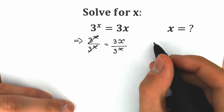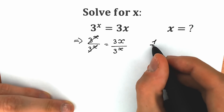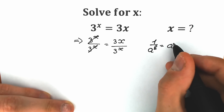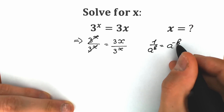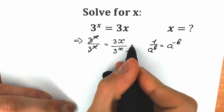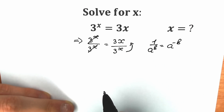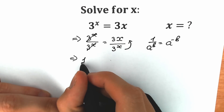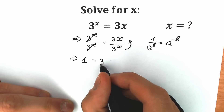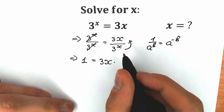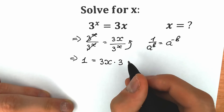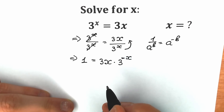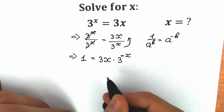Don't forget about the power rule: when we have 1 over a to the power b, we can write it as a to the power minus b. So when we bring 3 to the x into the numerator, we need to put minus. As a result, on the left side we have 1 equal to 3x times 3 to the power minus x. This is our first step.